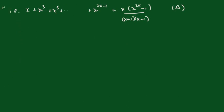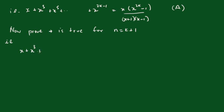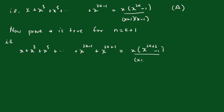Now we have to prove it true for n equals k plus 1, that is: x plus x cubed plus x to the power 5 plus x to the 2k minus 1 plus x to the 2k plus 1 equals x times (x to the 2k plus 2 minus 1) all over (x plus 1)(x minus 1).